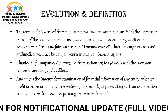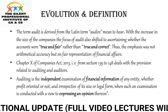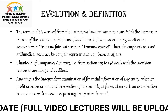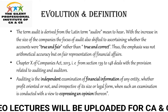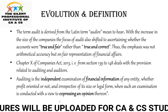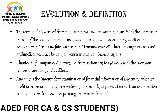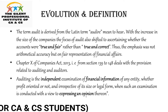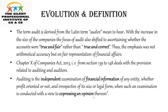The second element is examination of financial information — what do we audit? We generally audit the financials of the company, that is the balance sheet, P&L, cash flows, etc. It may be profit-oriented or not, irrespective of size and legal form. Such an examination is mainly conducted with a view to express an opinion on the financial statements of the company.